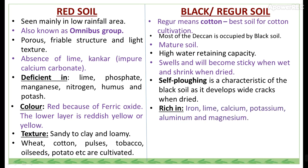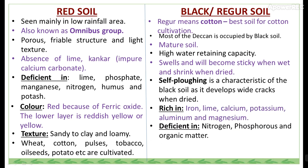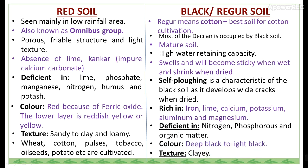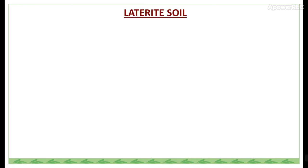Black soil is rich in iron, lime, calcium, potassium, aluminium and magnesium, but deficient in nitrogen, phosphorus and organic matter. The color of black soil is deep black to light black, and the texture is clay.